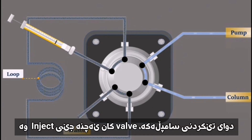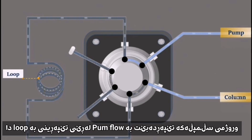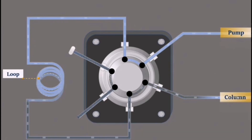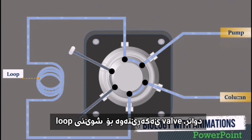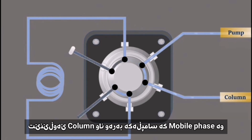After loading the sample, the valve is switched to the inject position. The flow delivered by the pump flows through the loop, forcing the sample ahead of it, flowing to the column. Then the valve returns to the load position, and the mobile phase moves the sample through the column.